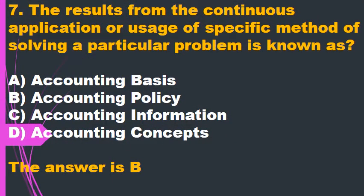Question 7. The result from the continuous application or usage of a specific method of solving a particular problem is known as: A. Accounting basis. B. Accounting policy. C. Accounting information. D. Accounting concepts. The answer is B.